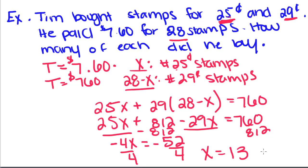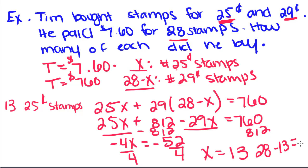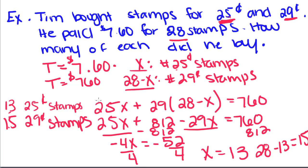Just like the last one, we have to make sure we answer the question completely. The question asks how many of each did he buy. X is the number of 25-cent stamps, so he bought 13 25-cent stamps. And 28 minus X is the number of 29-cent stamps: 28 minus 13 equals 15, so he bought 15 29-cent stamps. You can always check your work by plugging these two numbers into the equation.